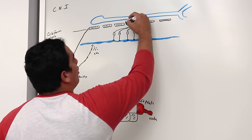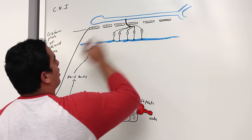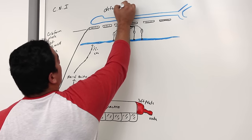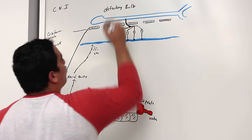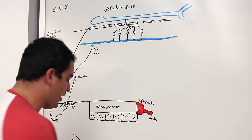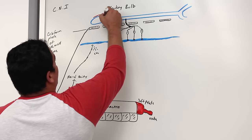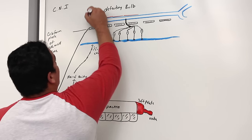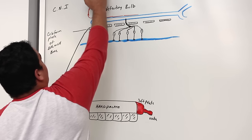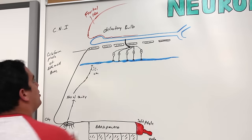You see this nerve running through the cribriform plate of the ethmoid bone into this big structure right here — this is called the olfactory bulb. This is right underneath the frontal lobe of the cerebral cortex. The brown structure here represents a part of the frontal lobe.